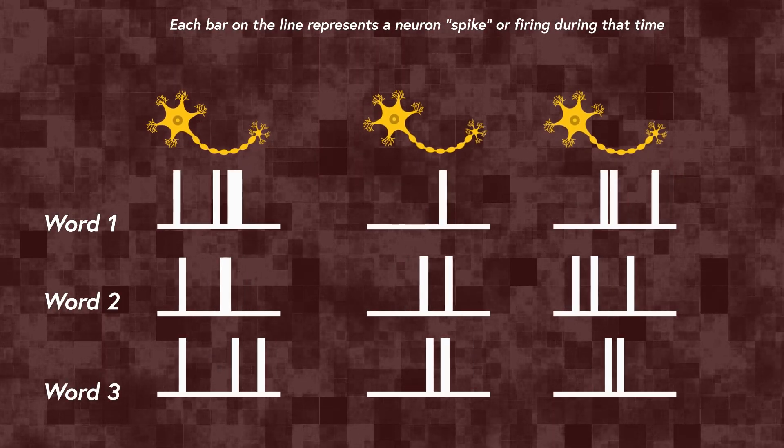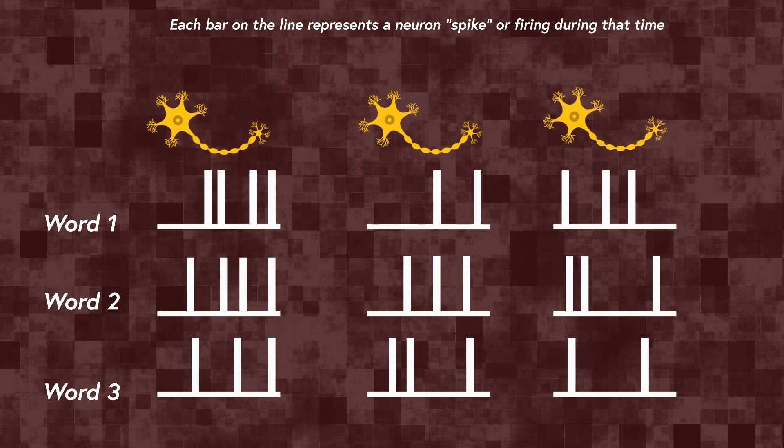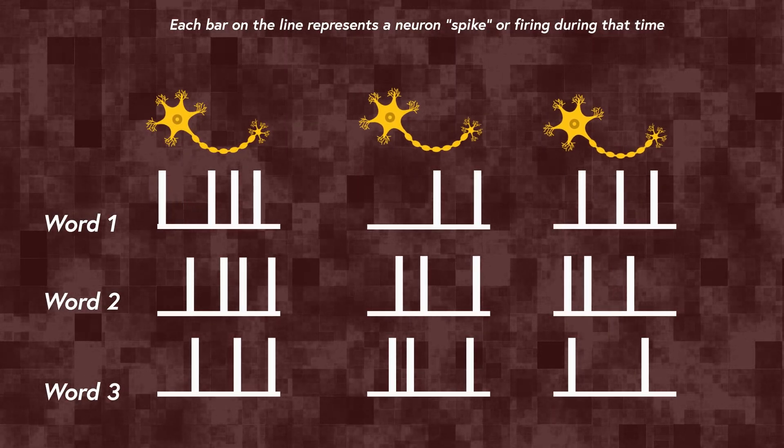If the real data showed stronger time-related firing than the shuffled versions, it ruled out the possibility of any firing patterns being due to random chance, confirming the neuron was a true time cell.